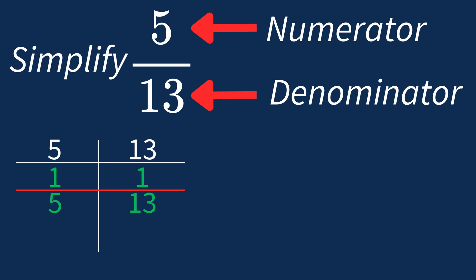This means we'll divide both the numerator and denominator by 1 to see if anything changes. Dividing the numerator 5 by 1 gives us 5. Dividing the denominator 13 by 1 gives us 13.